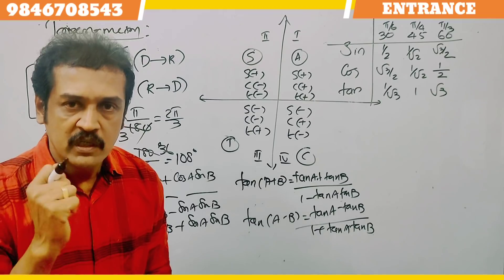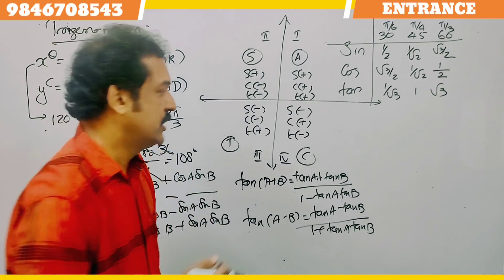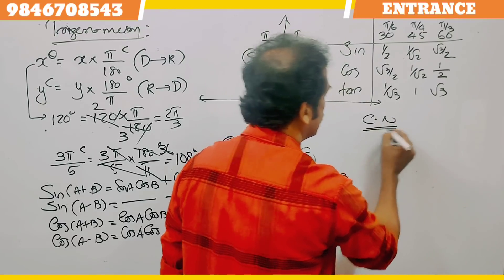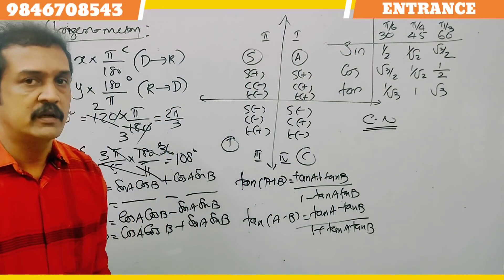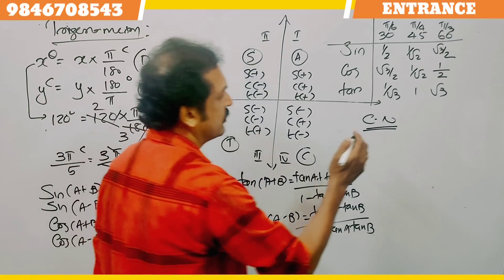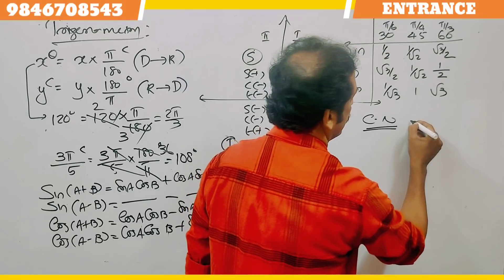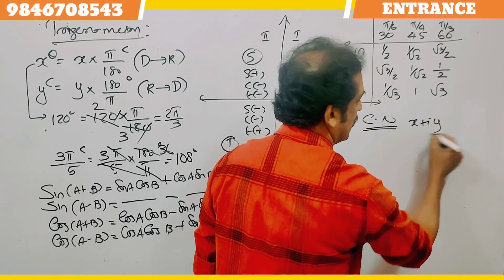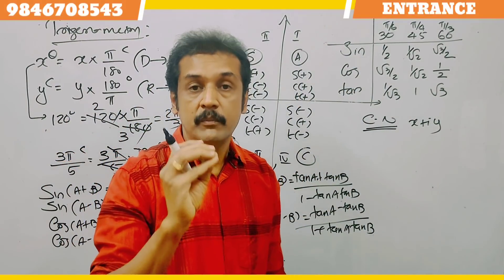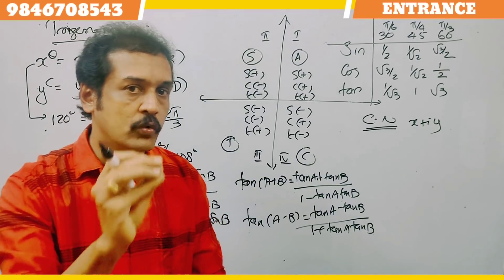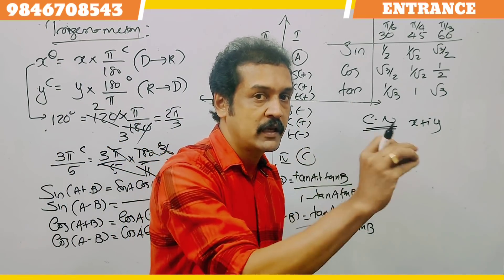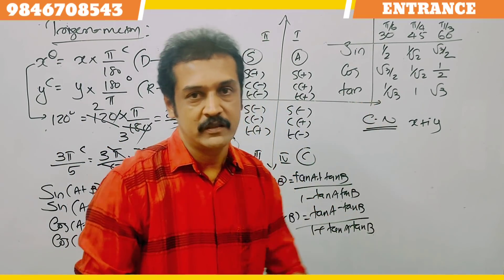Next is Complex Numbers. We will learn three important things. The standard form is x + iy, where x is the real part and y is the imaginary part. For example, 2 + 3i: 2 is the real part and 3 is the imaginary part.